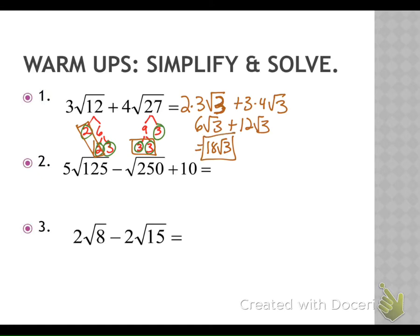Next up we have a hundred and twenty-five. Who can tell me factors of a hundred and twenty-five? Five and twenty-five. Factors of twenty-five? Five and five. I'm going to circle our leaves — those are all of our fives. I'm going to box in the ones that have buddies. It's my five, so I have five times five, square root of the one that doesn't have a buddy, which is the five.